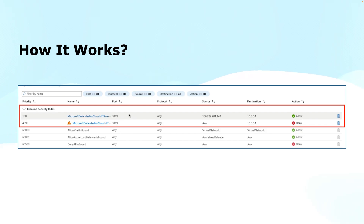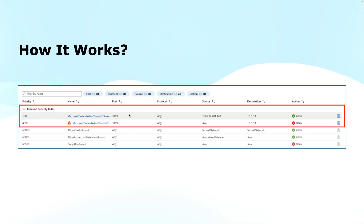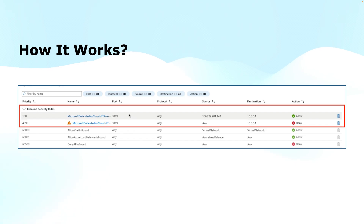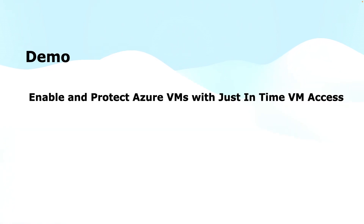In this case, the rule with priority number 100 is the winning one. This rule will be automatically deleted after the one-hour duration configured by the admin, or as specified when the request was sent. So it was approved for one hour. This rule with priority number 100 will be automatically deleted by the Just-in-Time VM Access feature — that is the dynamic management of these NSG rules.